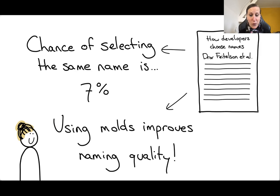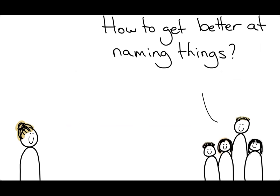But this paper also shows, which is, I think, a really nice result, that if you agree on molds, if as a team you say this is the mold that we pick, and then you always use that same structure, then naming quality improves. And they had external experts verify the quality of the names. So name quality just goes up if you agree on the name molds.